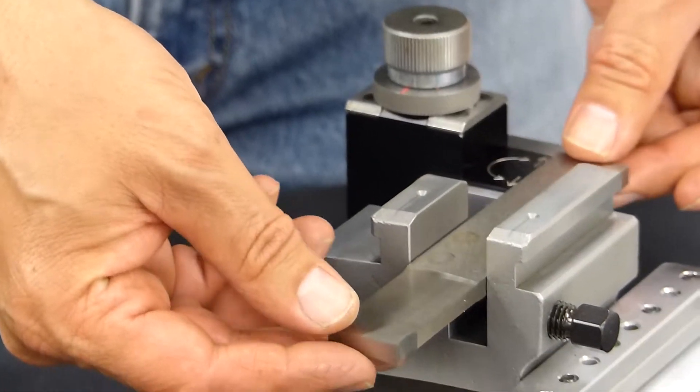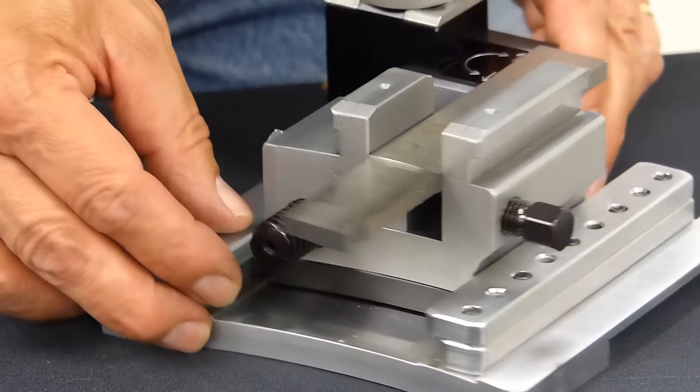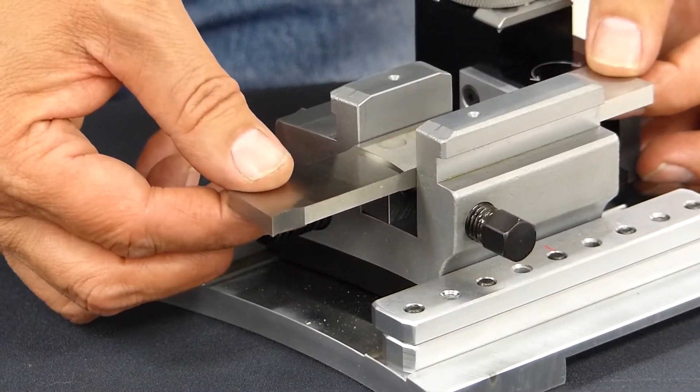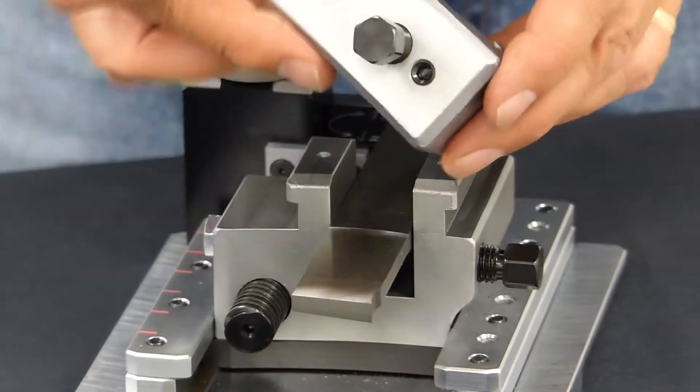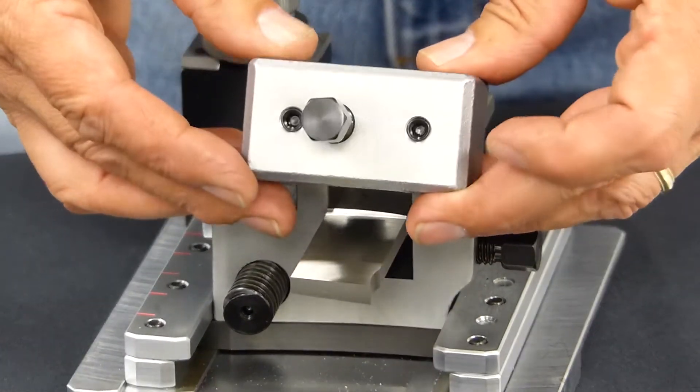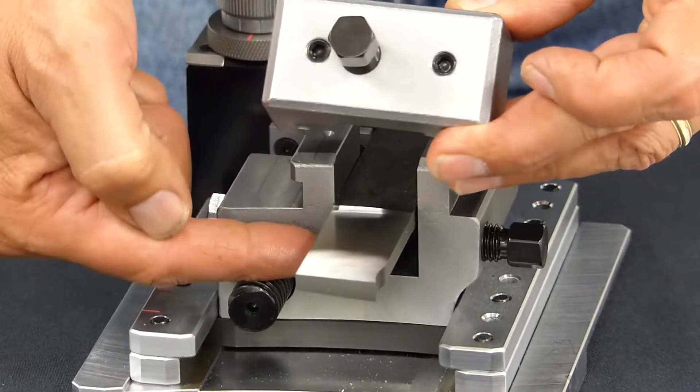Place our parting blade in, position it wherever we need to. Again, place the cover over, paying attention to place it over the lower support.